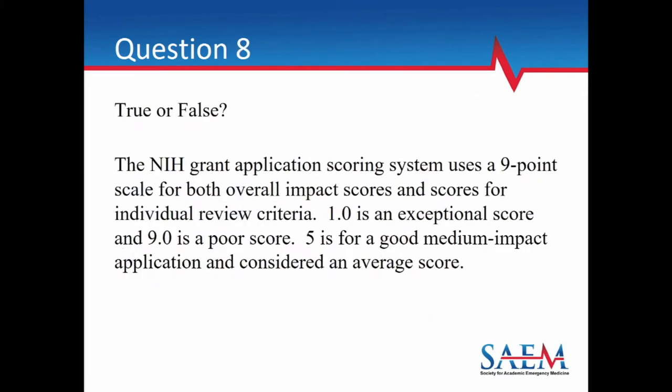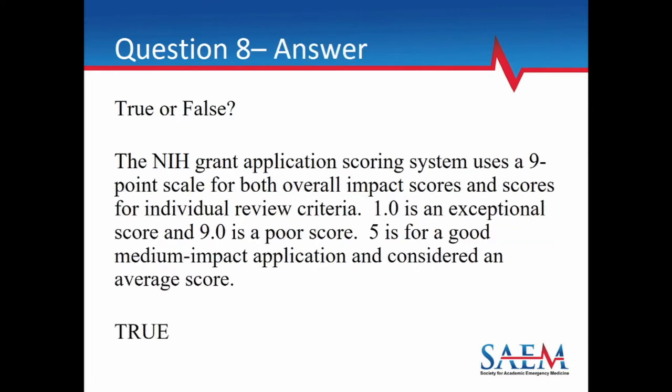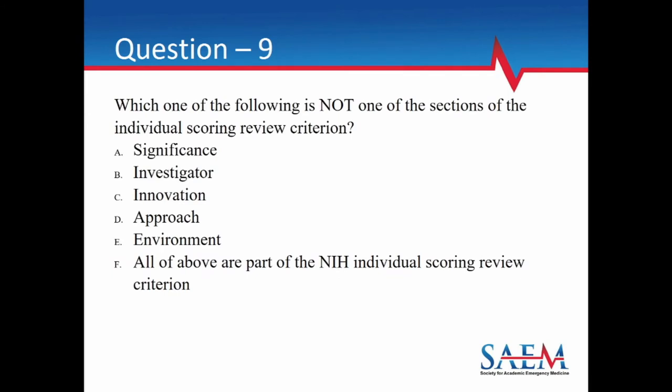Question 8: True or false — the NIH grant application scoring system uses a nine-point scale for both overall impact score and individual criteria scores, where 1.0 is exceptional, 9.0 is poor, and 5 represents an average application. The answer is true.